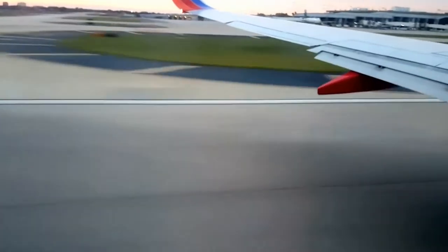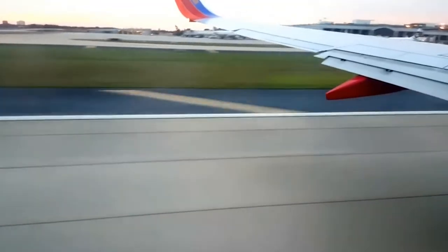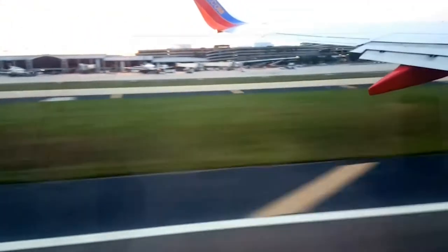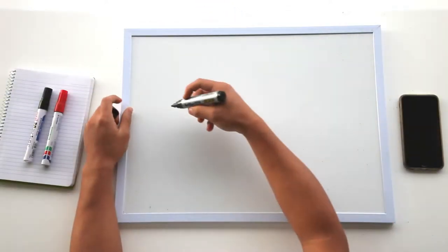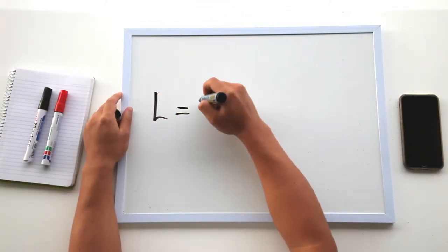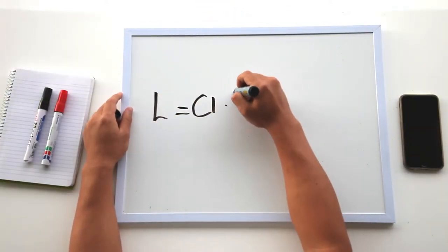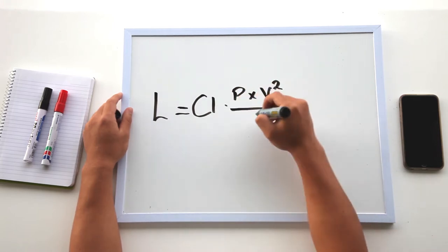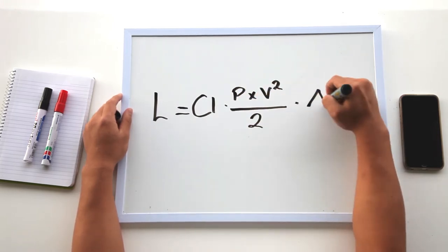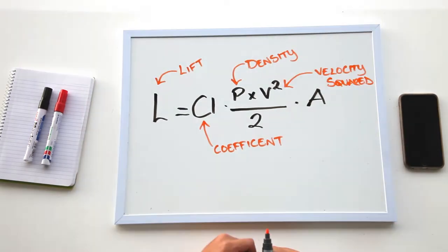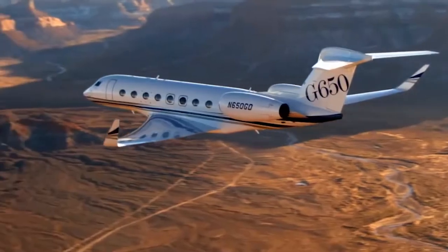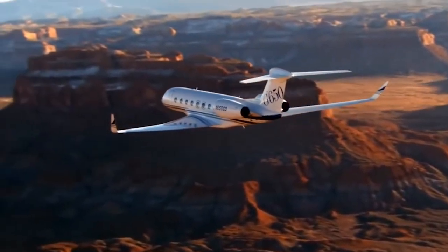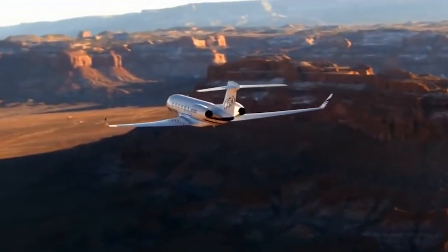One such equation is the lift equation, used to calculate the lift created by aeroplane wings. The lift equation is: lift equals coefficient times density times velocity squared, divided by two, times wing area. Without the lift equation, planes would not exist and we'd be unable to effortlessly travel thousands of kilometres in a few hours.